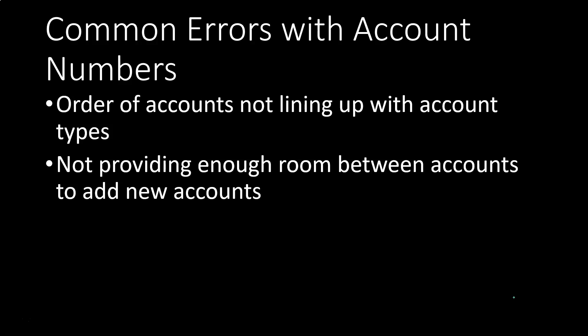The second issue is not providing enough room between account numbers to add new accounts. It's tempting when you put in account numbers to just number each group sequentially — for example, assets starting with one, liabilities with two, equity with three — and then place accounts right next to each other. So the asset account for cash is 101, accounts receivable is 102, other current assets is 103, and so on. The problem is that if you add another checking account in the future, there's no room between 101 and 102.